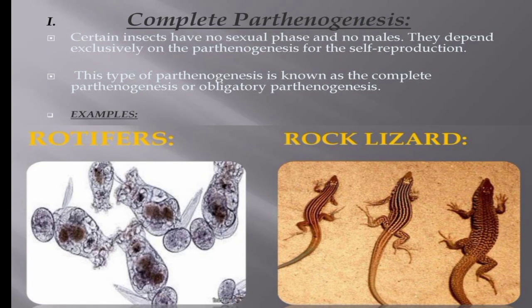An example of complete parthenogenesis is rotifers, where females reproduce exclusively by parthenogenesis. In monogonate rotifers, females can alternate between sexual and asexual reproduction. Another example is the Caucasian rock lizard from the Caucasian region of the Soviet Union, which reproduces only by parthenogenesis, always producing females by this process. There are no males at all.